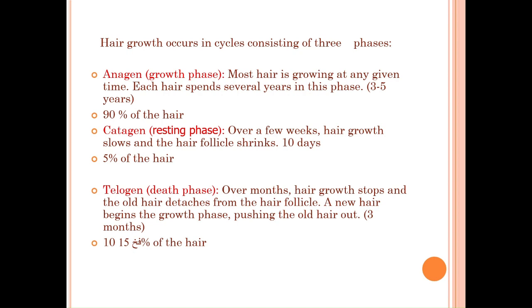The first is the growth phase, called anagen — 90% of your hair is in this phase, lasting three to five years, sometimes up to seven. Then you have the resting phase called catagen, lasting only up to ten days, with 5% of hair in it. Finally there is the death phase called telogen, lasting up to three months, with 10–15% of hair in it.